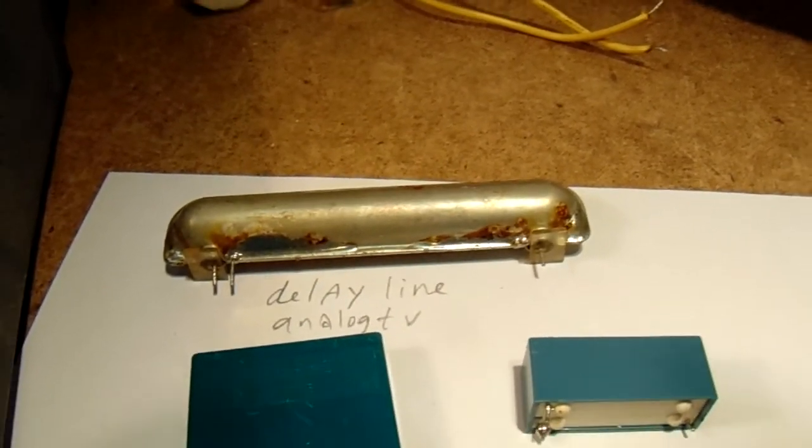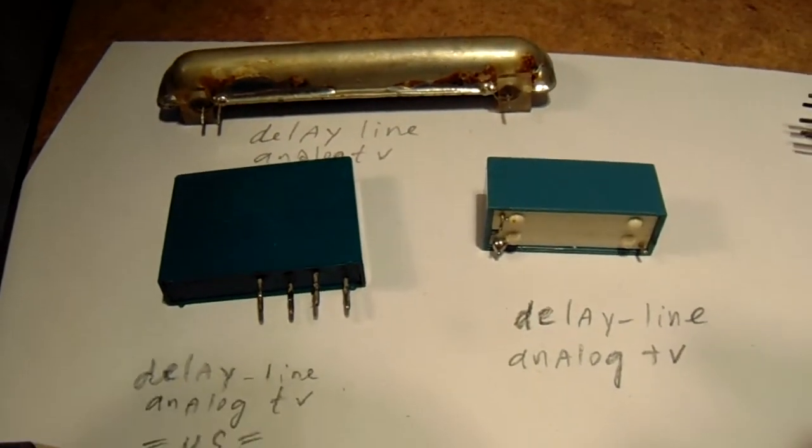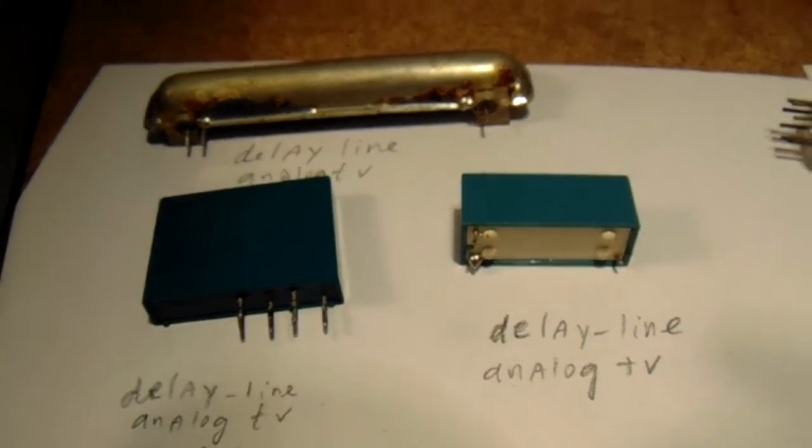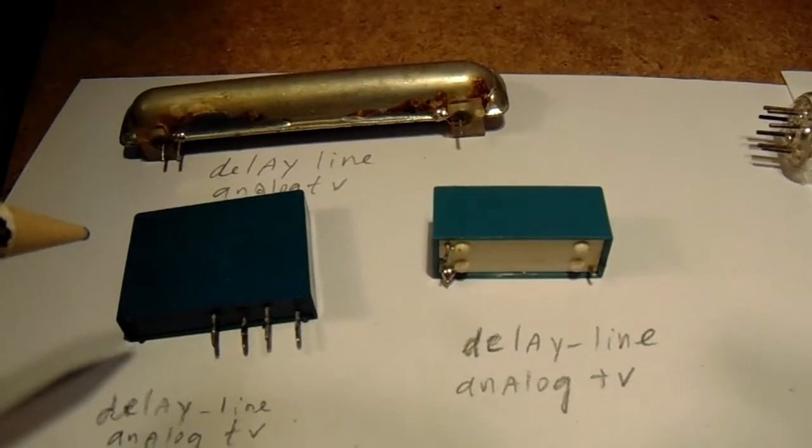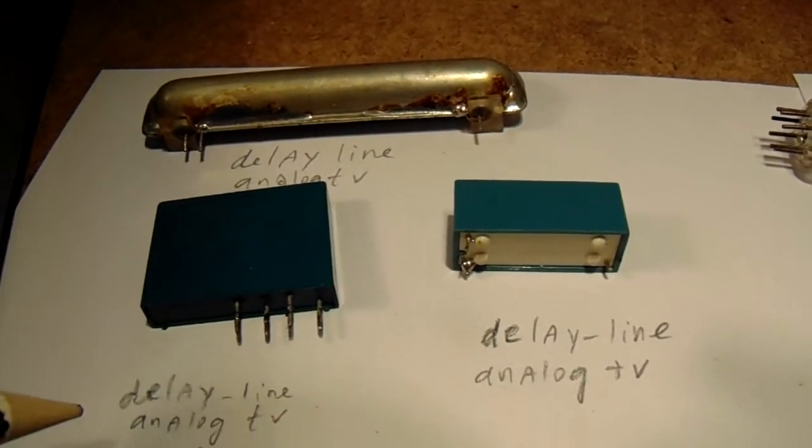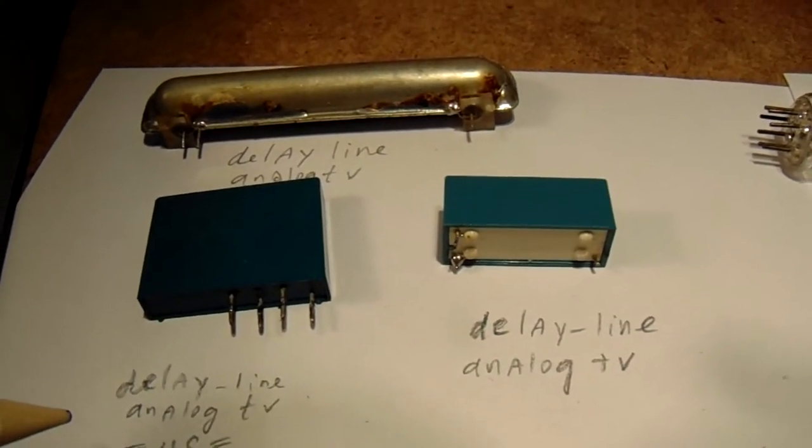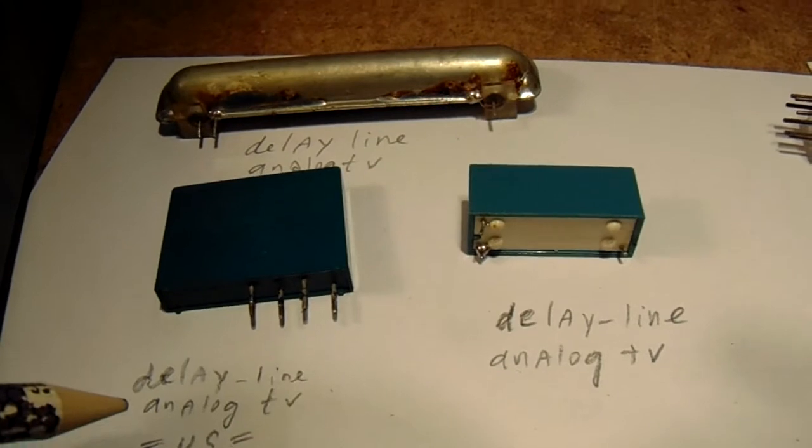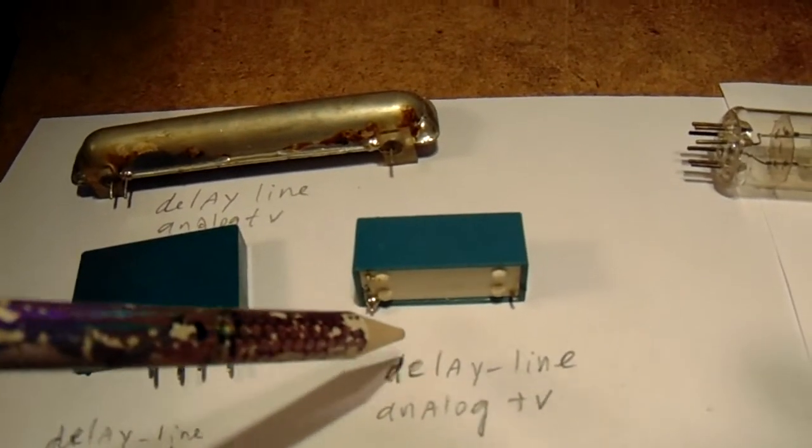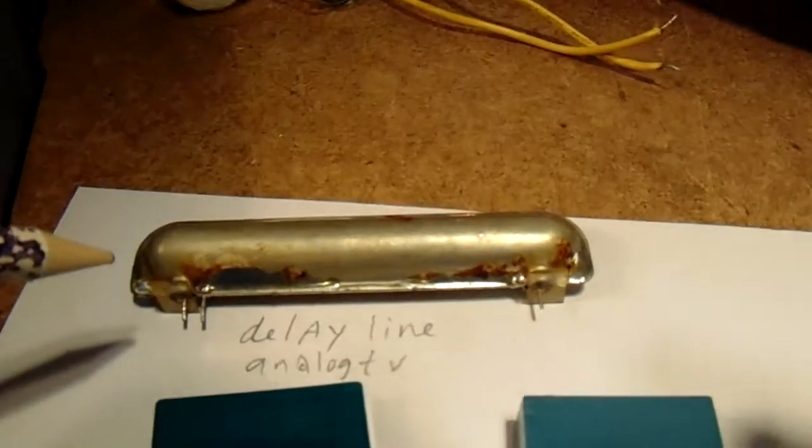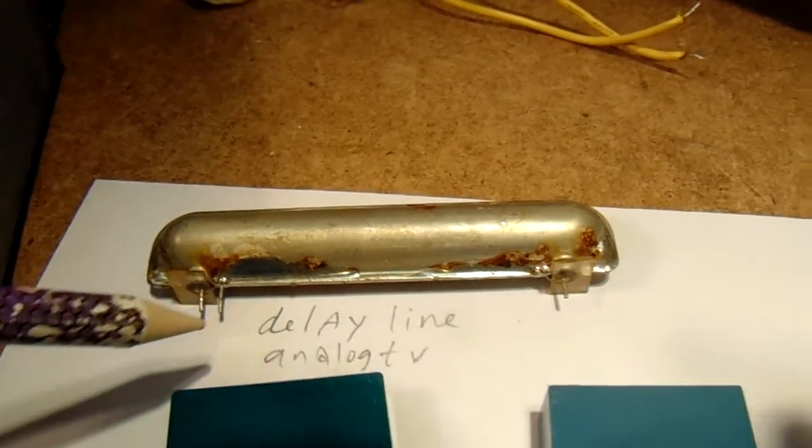The delay line gave a certain delay between two signals that were added and were necessary to make the colors on the TV, the old analog TV, work properly. So this is a very old one, delay line from the 1970s.